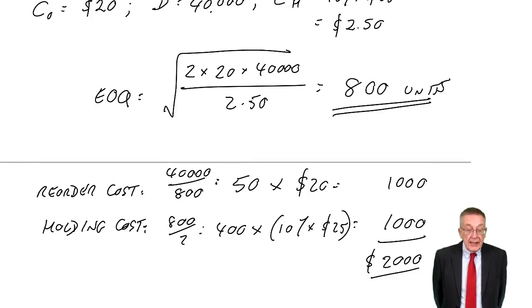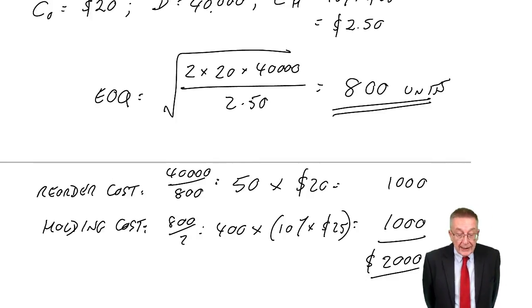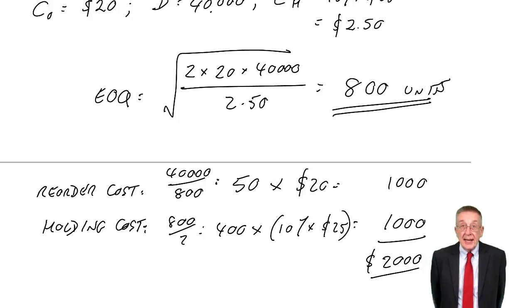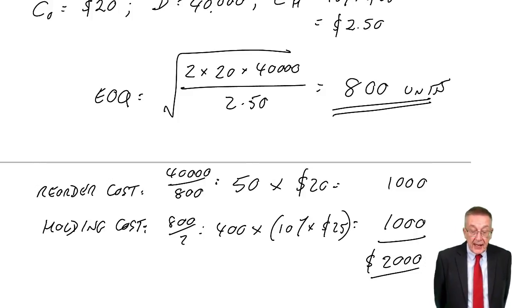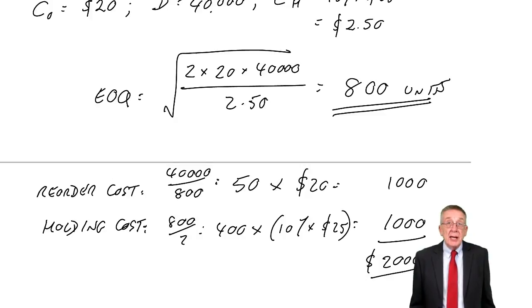For the information given in example one, the example we did in the last lecture, the supplier now offers us discounts on purchase price as follows, and it depends on the quantity we order each time.